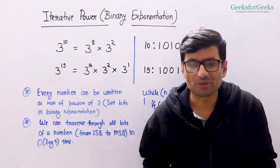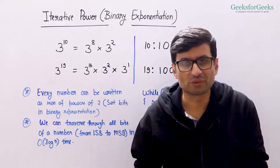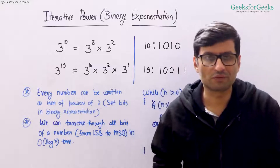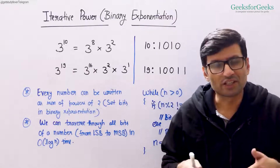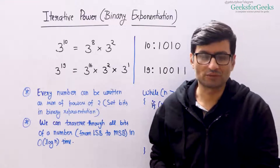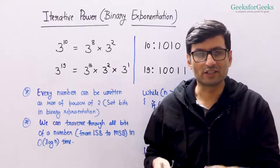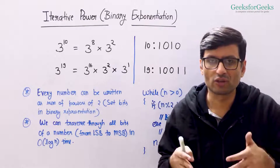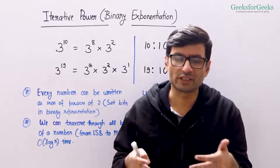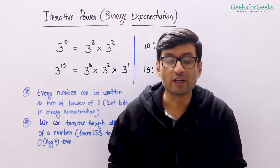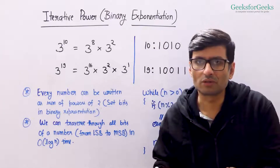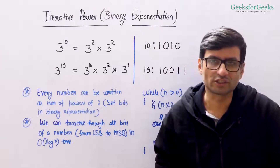Let us now talk about an iterative solution to compute the power of a number. The idea of this iterative solution is different from the recursive solution, and this solution is also going to take O(log n) time if we are computing x to the power n. This solution is also going to require O(1) auxiliary space.